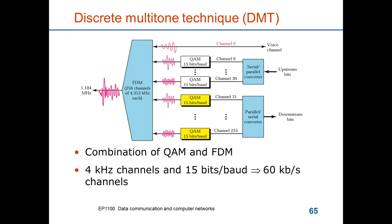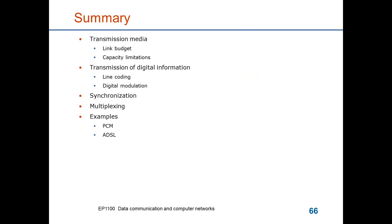So in summary for this teaching module, I've showed transmission media. How you can look at the link budget and the capacity limitations of it. We have in this part looked at transmission of digital information by line coding and digital modulation. I've briefly mentioned synchronization and multiplexing and shown examples of multiplexing, such as PCM of digital telephony or synchronous digital subscriber loop.